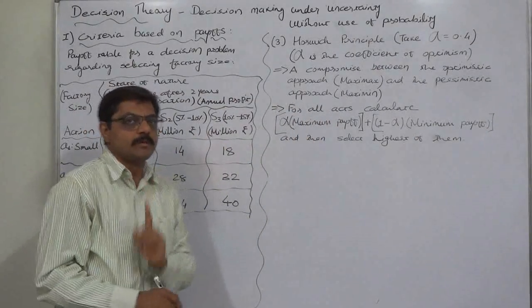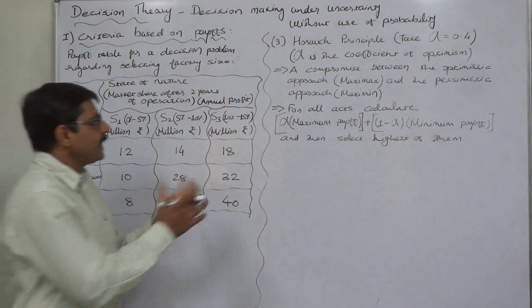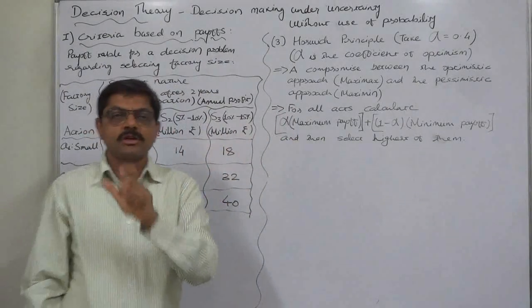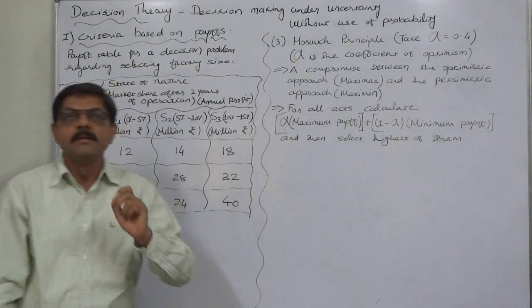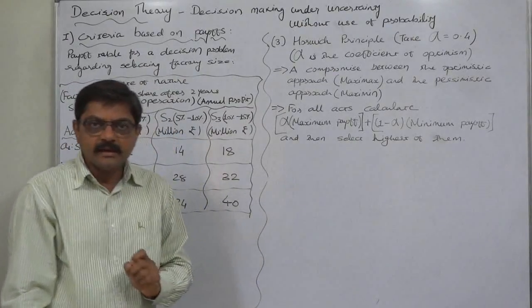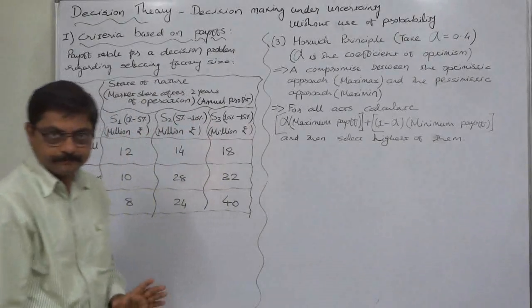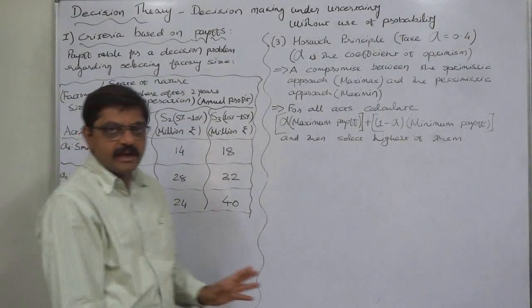This is subjective probability. Indirectly we are going to use probability, but this probability is totally subjective for the particular decision maker. It is not at all based on any past records.